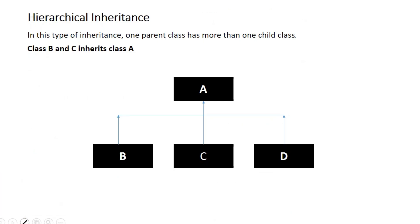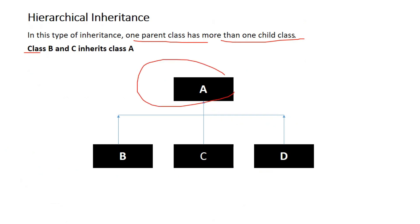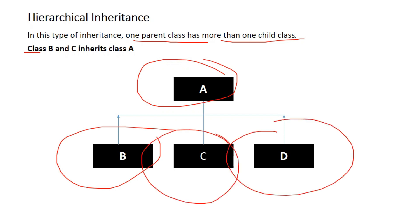In hierarchical inheritance, one parent class has more than one child class. This is our parent class and it has many children — B, C, and D are child classes of the same parent.